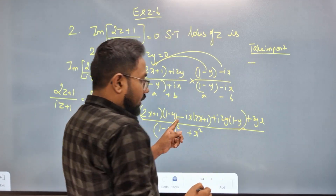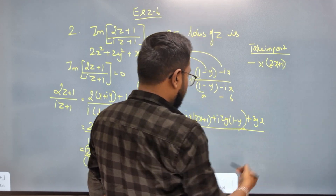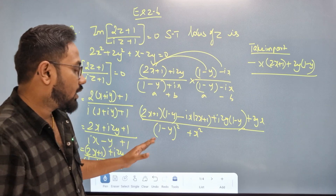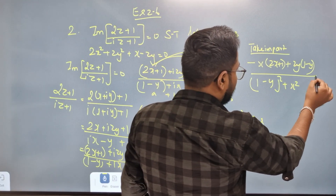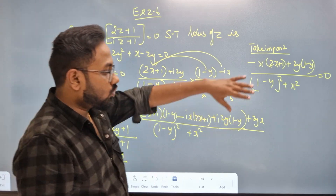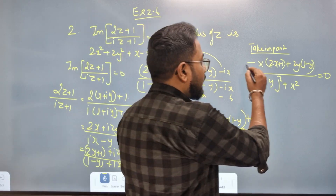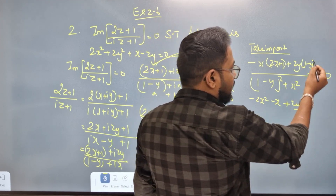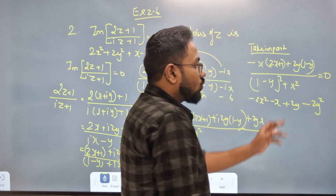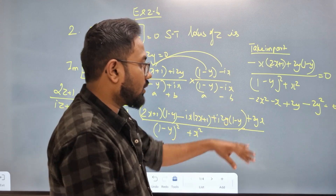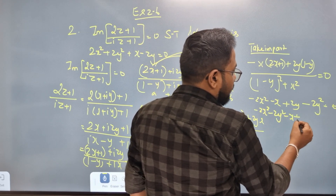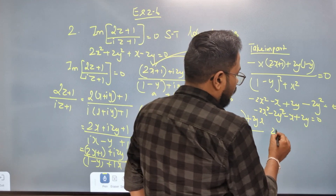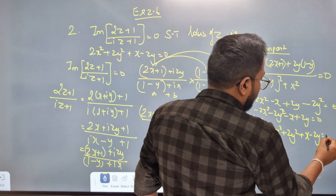Using these terms: the imaginary part gives minus (2x + 1) times x, plus (2y + 1) times (1 − y), all divided by (1 − y)² + x², set equal to 0. Expanding: minus 2x² minus x plus 2y minus 2y² equal to 0. Simplifying: minus x plus 2y equal to 0. Multiplying through by minus one: x minus 2y equals 0.